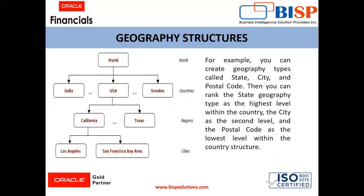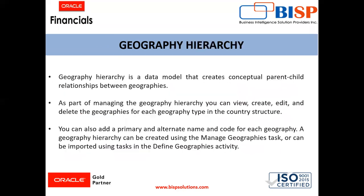This way we specify the country structure. Then we create the parent-child relationship, which is called the hierarchy. For example, USA is the parent and California and Texas are the children. This is how we define the hierarchies.